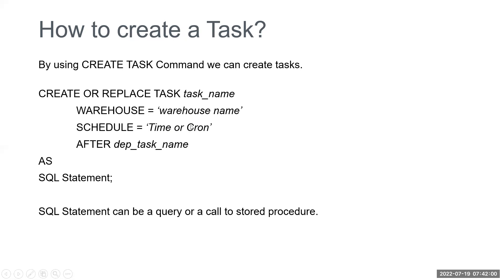For the schedule, we can simply mention a time interval or put a CRON entry. If we want to mention dependencies, we use the AFTER clause followed by the dependent task name — once that task completes, the current task is triggered. This is optional: only specify it if dependencies are needed. The AS SQL statement at the end can be any query — DDL, DML, or a stored procedure call. This is how we create a task in Snowflake.